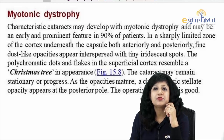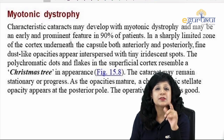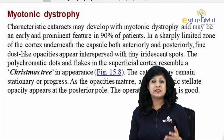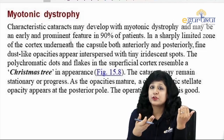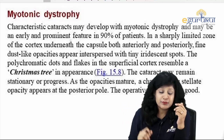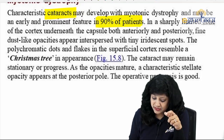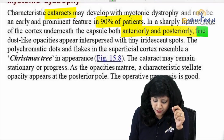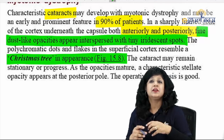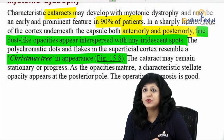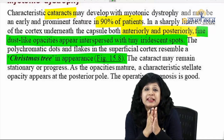Talking about myotonic dystrophy — these topics are important because they are systemic diseases, with great potential for integrated exam questions. In myotonic dystrophy, you can get cataract in 90% of patients in a sharply limited zone of the cortex. Underneath the capsule — both anterior and posterior — we get fine dust-like opacities that are separated and resemble a Christmas tree, which is why it is called Christmas tree cataract.